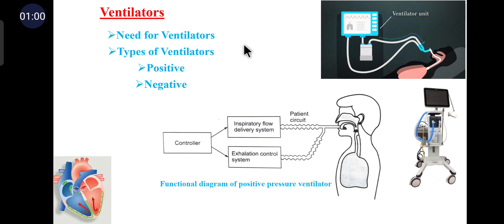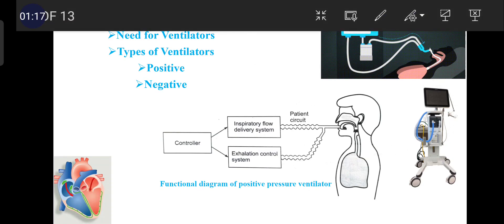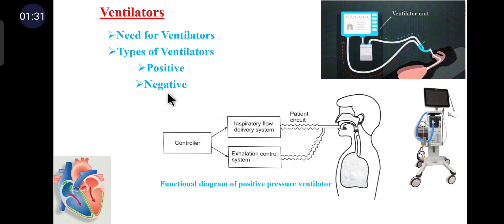The main function of ventilators is to ventilate the lungs in a manner close to natural respiration. Natural inspiration is a result of negative pressure in the pleural cavity generated by the movement of the diaphragm. Ventilators were initially designed to create the same effect and are called negative pressure ventilators. In negative pressure ventilation, the flow of air to the lungs is facilitated by generating a negative pressure around the patient's thoracic cage.